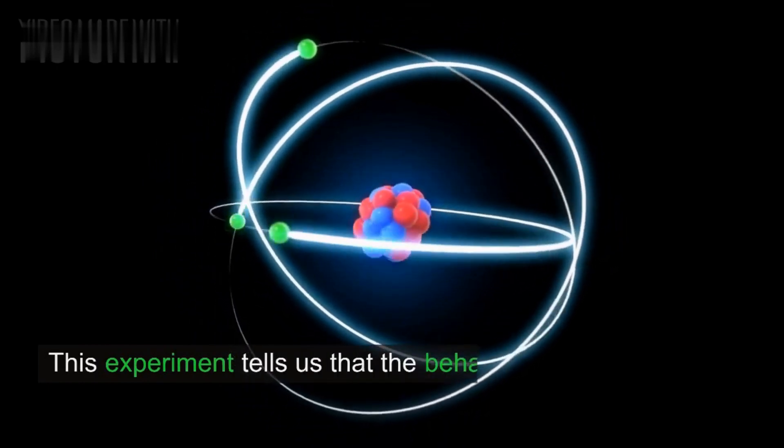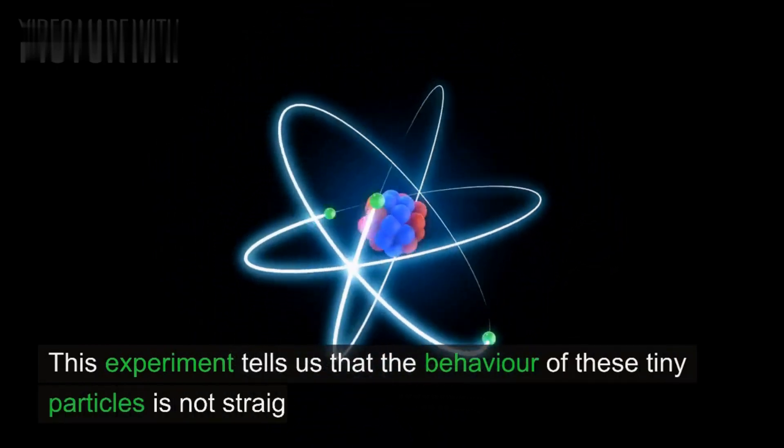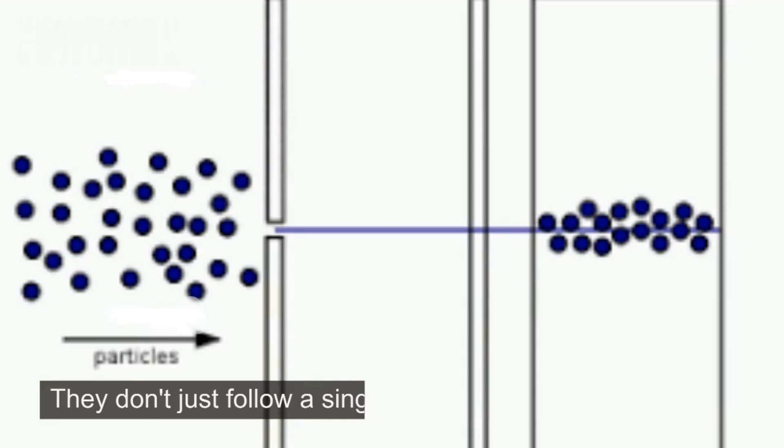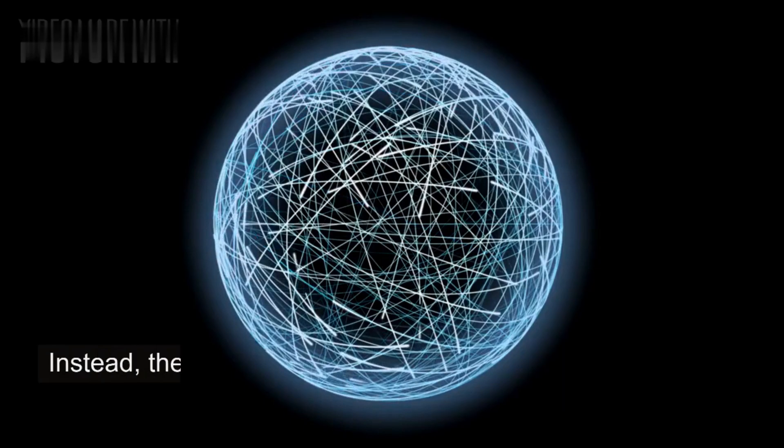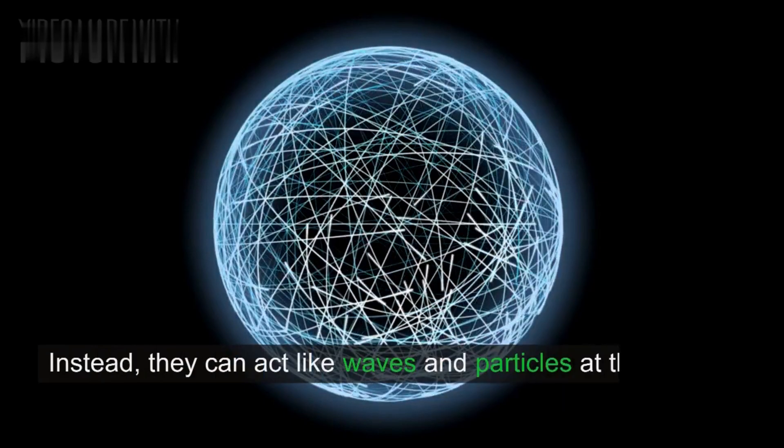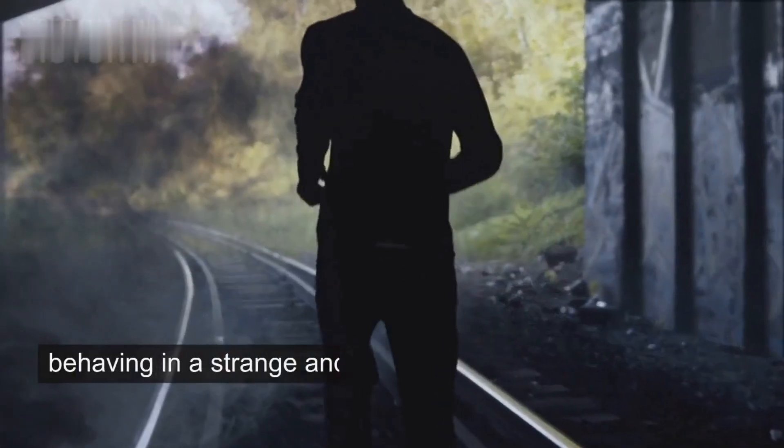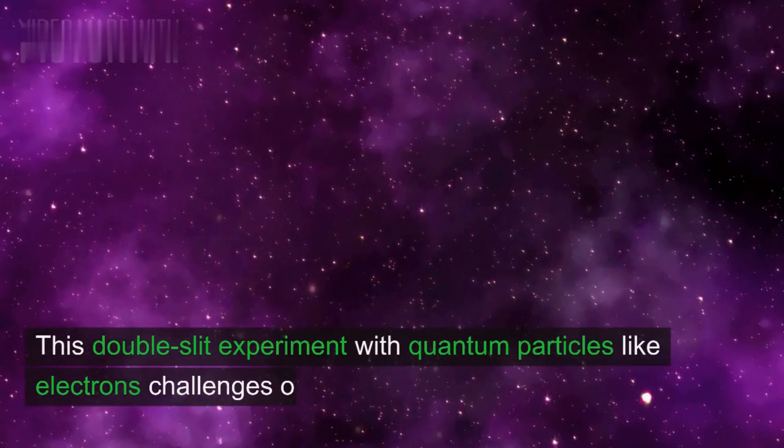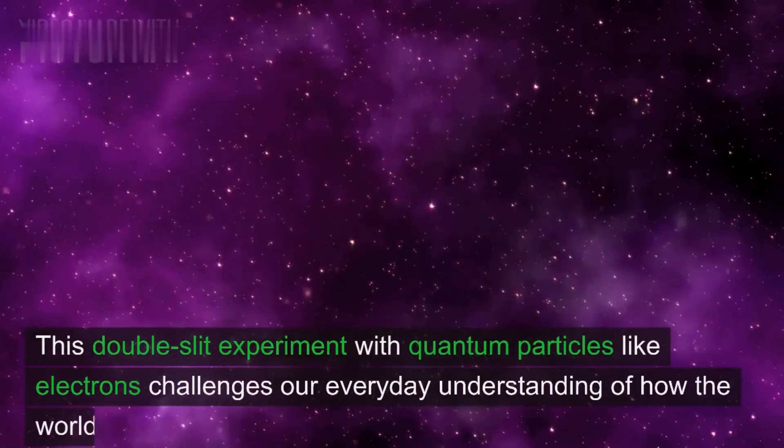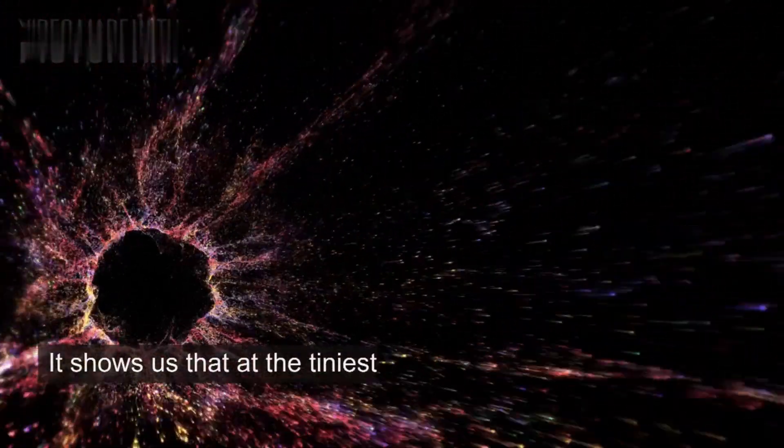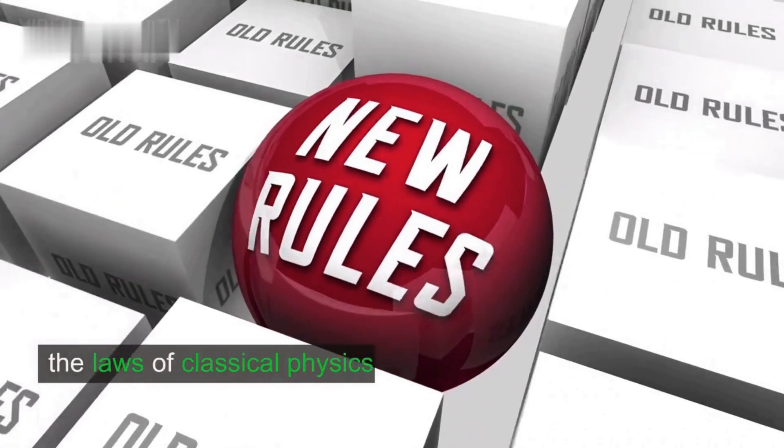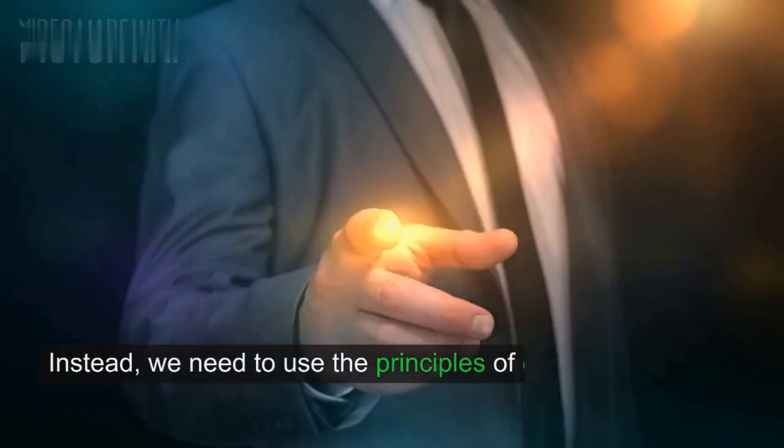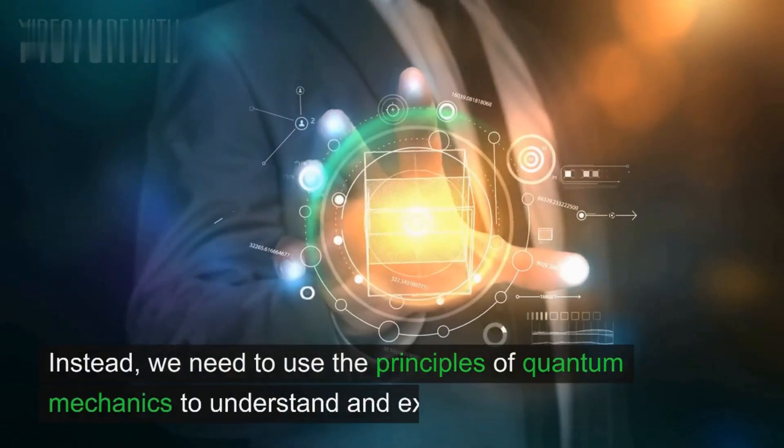This experiment tells us that the behavior of these tiny particles is not straightforward. They don't just follow a single path as we would expect. Instead, they can act like waves and particles at the same time, behaving in a strange and unpredictable way. This double-slit experiment with quantum particles like electrons challenges our everyday understanding of how the world works. It shows us that at the tiniest scales, the laws of classical physics that we're familiar with don't fully apply. Instead, we need to use the principles of quantum mechanics to understand and explain these phenomena.